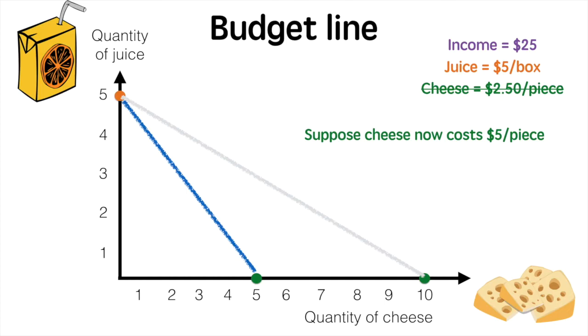Due to the change in price of one of the products, our budget line pivots inwards. If the price of cheese reduced, the budget line would have pivoted outwards.